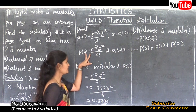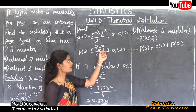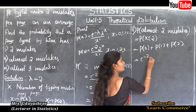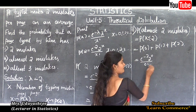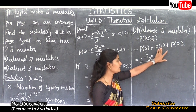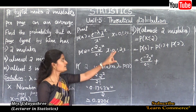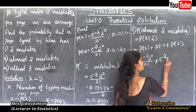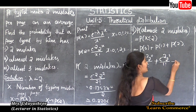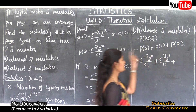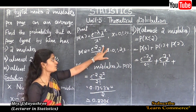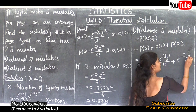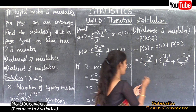Substituting into the PMF: P(0) = e to the power minus 2, times 2 to the power 0, divided by 0 factorial. P(1) = e to the power minus 2, times 2 to the power 1, divided by 1 factorial. P(2) = e to the power minus 2, times 2 to the power 2, divided by 2 factorial.